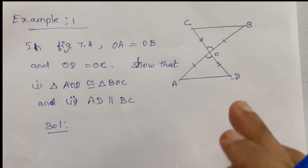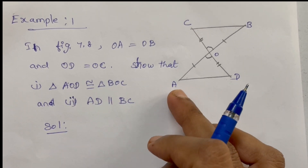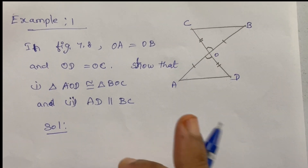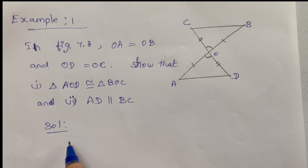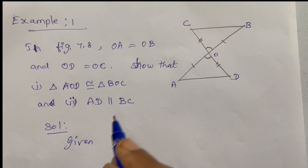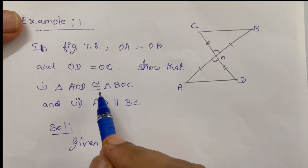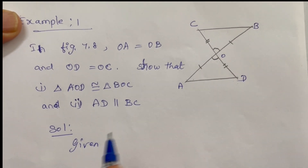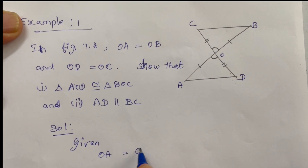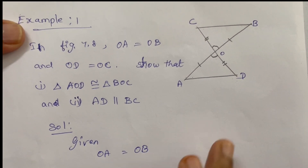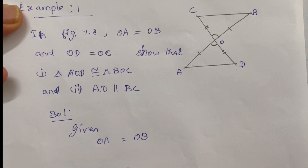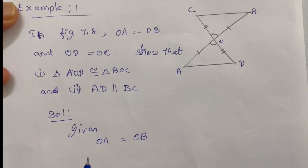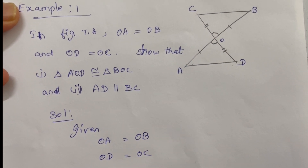Now, to prove the triangles congruent, we identify the given values. OA equals OB — that is one side equal. OD equals OC — that is the other side equal. So we have two sides equal.